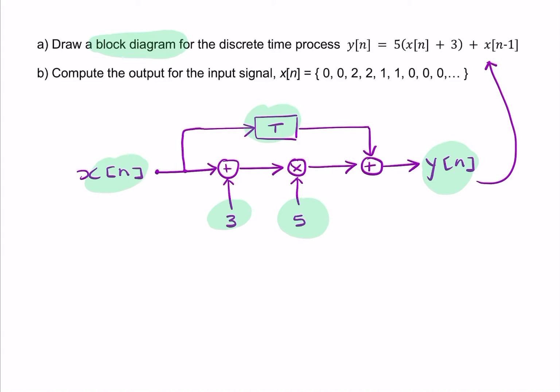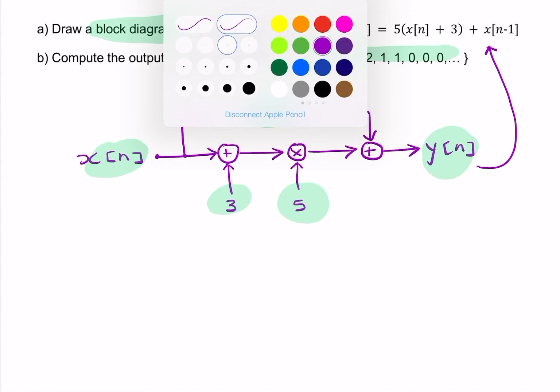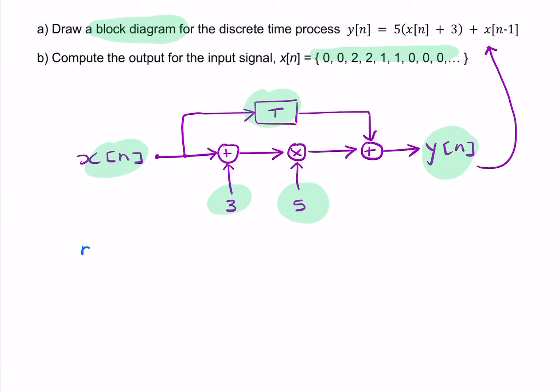The second part of the question is asking for the actual output. So find y of n. We're given the sequence for x of n and we're asked for y of n. So we need to feed x of n into this equation step by step, digit by digit, sample by sample. So sometimes it's useful to draw a table for this.